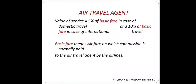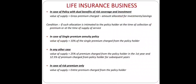Third case: Life Insurance Business. First, in case of a policy with dual benefit of risk coverage and investment - where both insurance and investment facility are provided (ULIP is the best example - Unit Linked Insurance Plan) - the premium paid is divided into two parts: one for insurance, one for investment. In this case, Value of Supply = gross premium charged MINUS amount allocated for investment/savings.